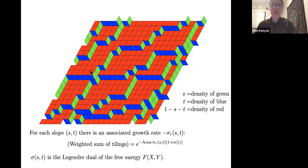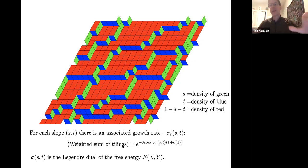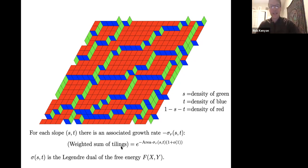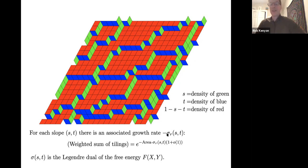For each s and t there's an associated growth rate: if I take an N×N torus, fix the slope (the homology class of blue-green paths), and let the torus get large, the partition function grows as the exponential of the area times some positive number. I call this minus sigma, so sigma is the surface tension. Sigma depends on r and also on s and t.